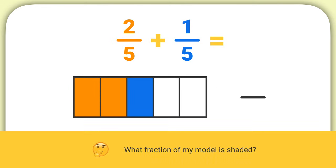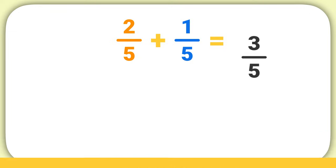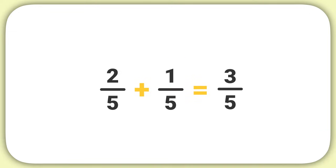Well, what fraction of my model is shaded? You can see there are three pieces shaded, so the numerator is three, out of a total of five pieces in my model. So the denominator is five. The answer to my problem is that two-fifths plus one-fifth is three-fifths.